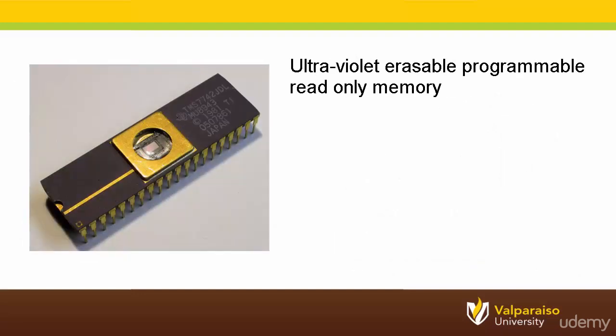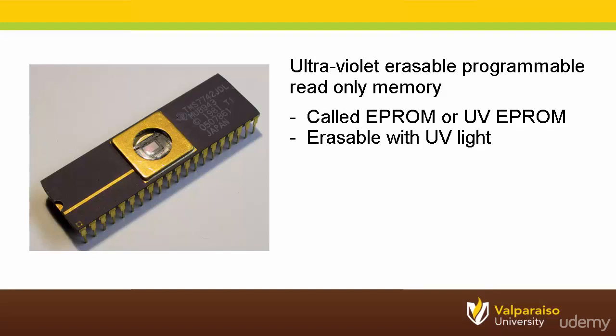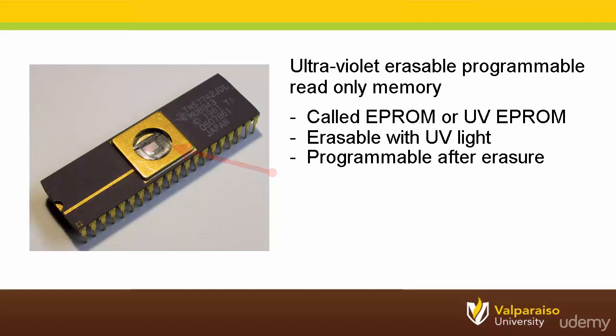The first major improvement on masked ROM program memories was the ultraviolet erasable programmable read-only memory, also known as UV EEPROM or simply EEPROM. EEPROM memories can be erased by exposure to strong ultraviolet light, typically for 10 minutes or longer, and then can be reprogrammed. EEPROM chip ceramic packages can be identified by the prominent quartz window which allows the UV light to enter. After programming, the window is typically covered with an opaque sticker or label to prevent accidental erasure.